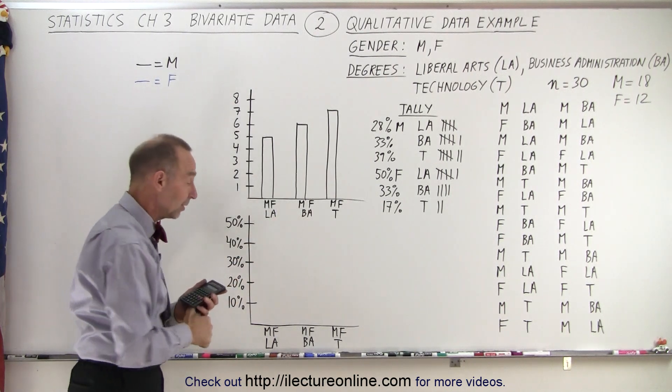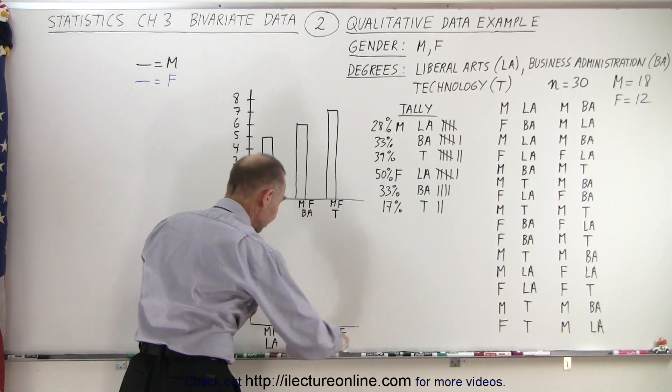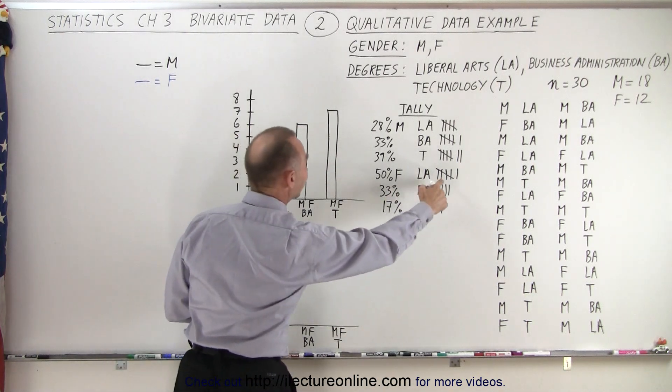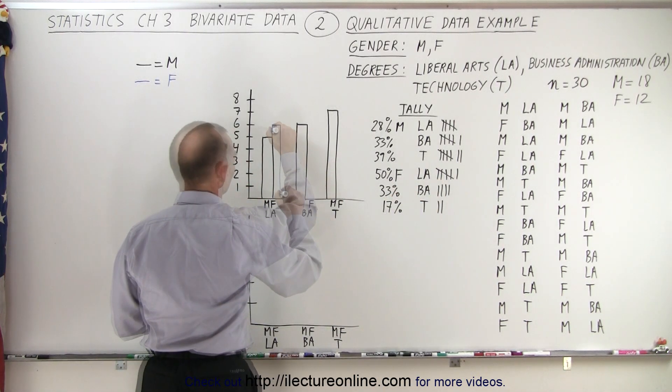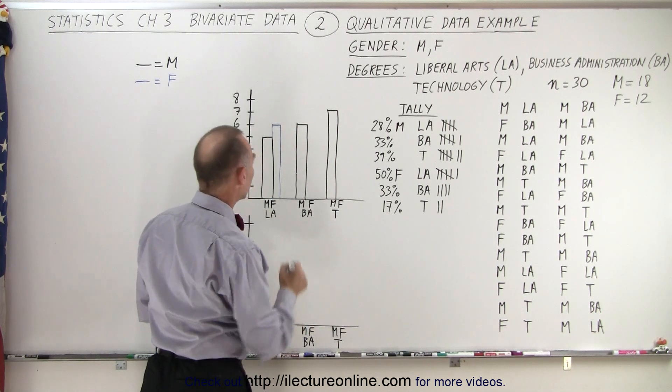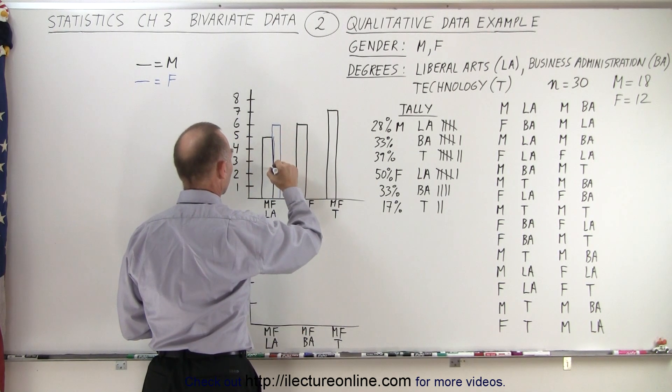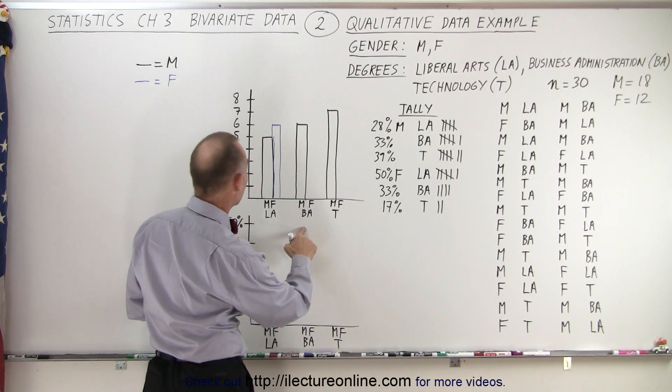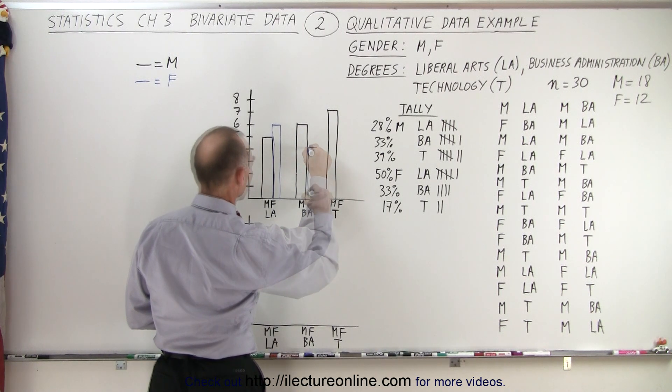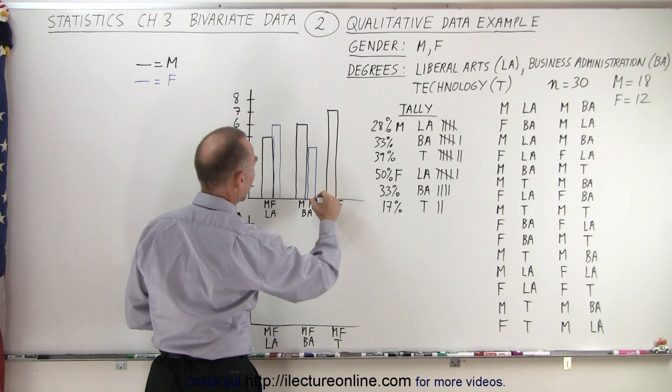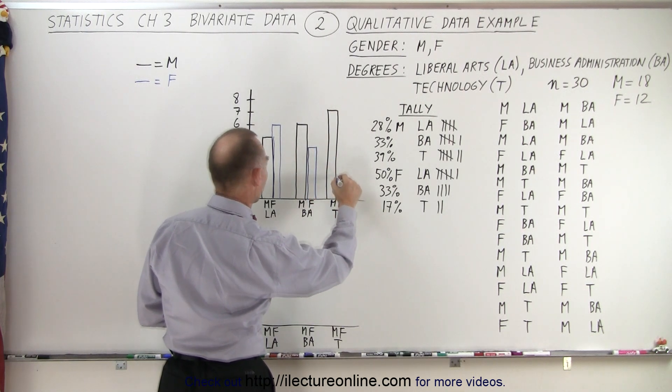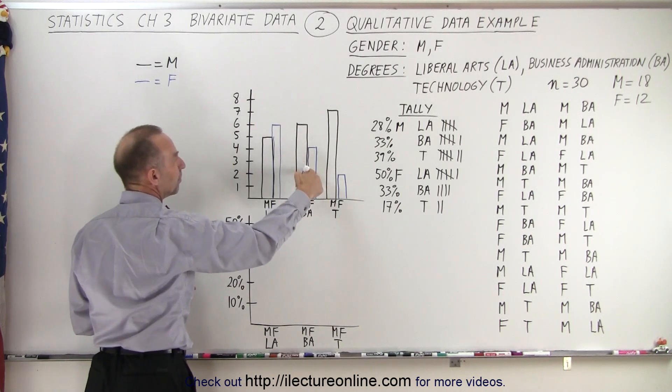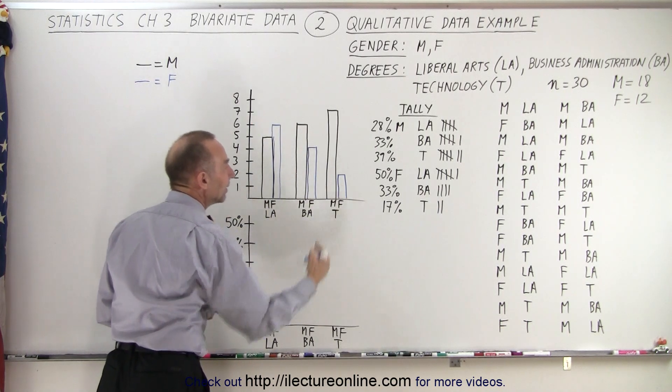Okay, so we have a total of 6 for Liberal Arts. Like so. And 4, and I guess I should make the color all the way down like this. Alright. Then for Business Administration, there's 4 of them. There we go. And for Technology, there's 2 of them. So you can see the trend: mostly Liberal Arts, then Business Administration, and then Technology.